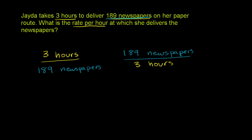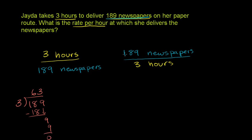If we divide 189 by 3 — let's do it over on the side right here. 3 goes into 189: 3 goes into 18 six times; 6 times 3 is 18. Subtract, bring down the 9 — 18 minus 18 is nothing. 3 goes into 9 exactly 3 times; 3 times 3 is 9, no remainder. So 189 divided by 3 is 63.